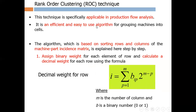This technique is specifically used and applicable in production flow analysis, where material is flowing through production. It is an efficient and easy-to-use algorithm for grouping machines into cells. This technique works by sorting rows and columns of the machine-part incidence matrix. The matrix I showed earlier is called the machine-part incidence matrix, and the different steps of this algorithm are explained here.